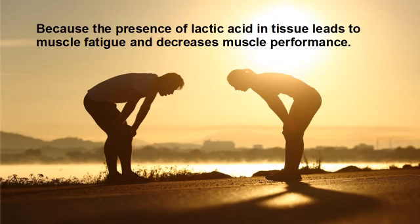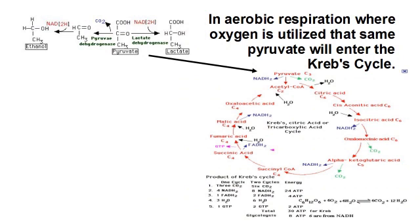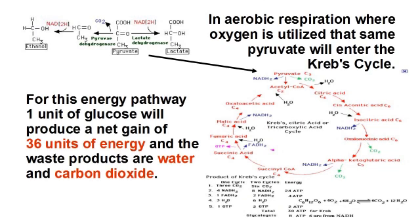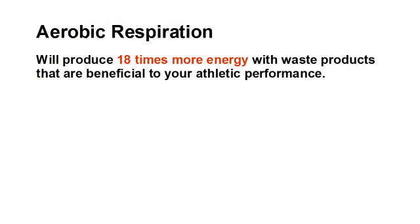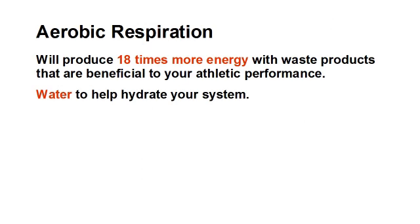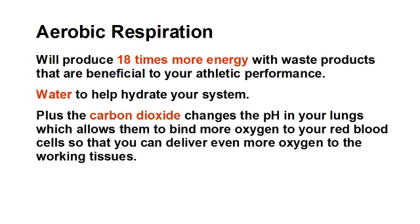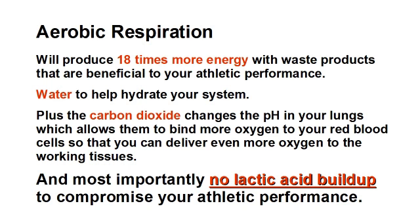The presence of lactic acid in tissue leads to muscle fatigue and decreases muscle performance. However, in aerobic respiration, where oxygen is utilized, that same pyruvate will enter the Krebs cycle. For this energy pathway, one unit of glucose will produce a net gain of 36 units of energy, and the waste products are water and carbon dioxide. Aerobic respiration will produce 18 times more energy, with waste products that are beneficial to your athletic performance: water to help hydrate your system, plus the carbon dioxide changes the pH in your lungs, which allows them to bind more oxygen to your red blood cells so that you can deliver even more oxygen to the working tissues.